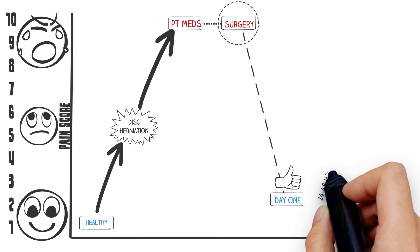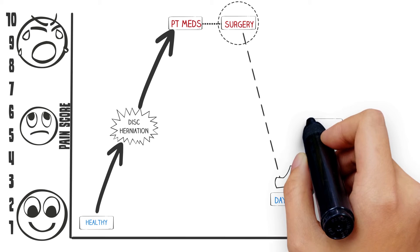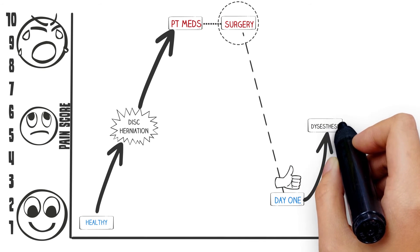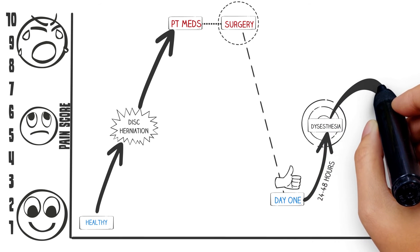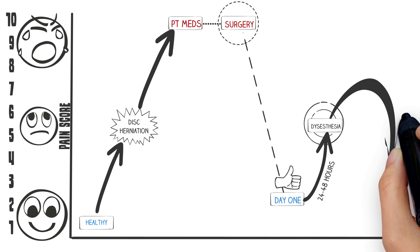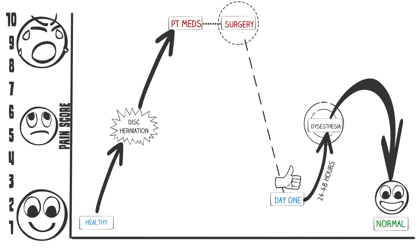24 to 48 hours later, increased blood flow to the dorsal root ganglion causes temporary swelling, and the pain may return. As the nerve continues to heal, the swelling comes and goes, but ultimately, the nerve root returns to normal and the patient is happy.